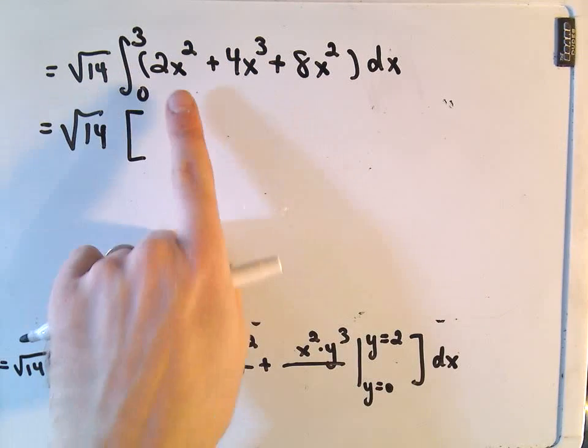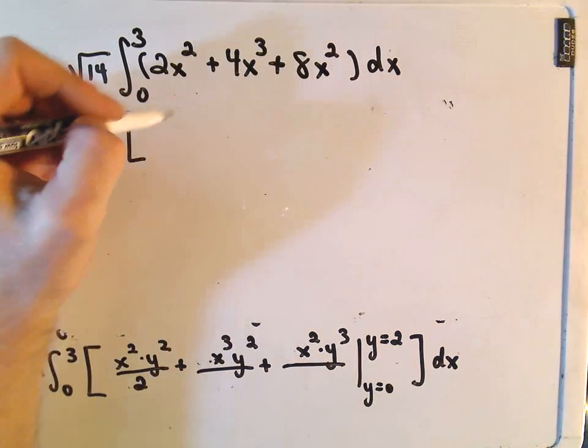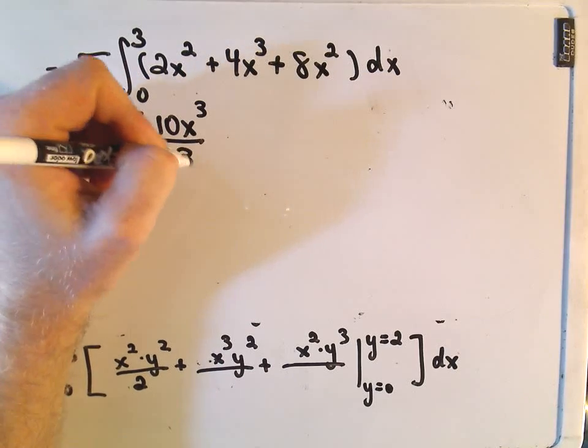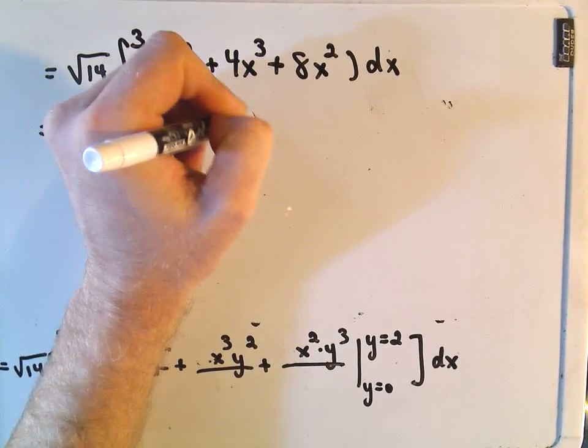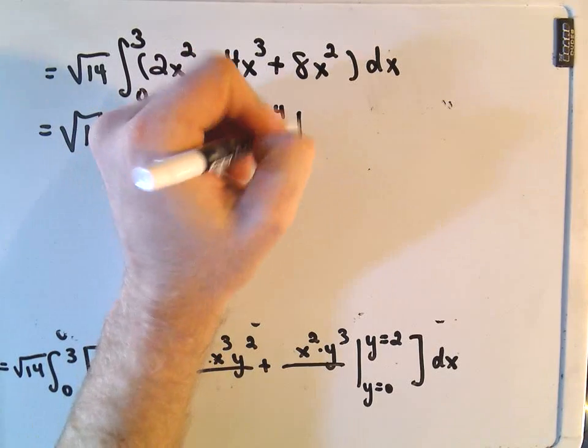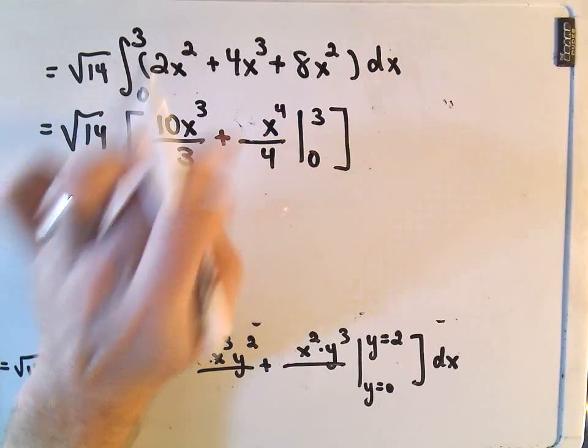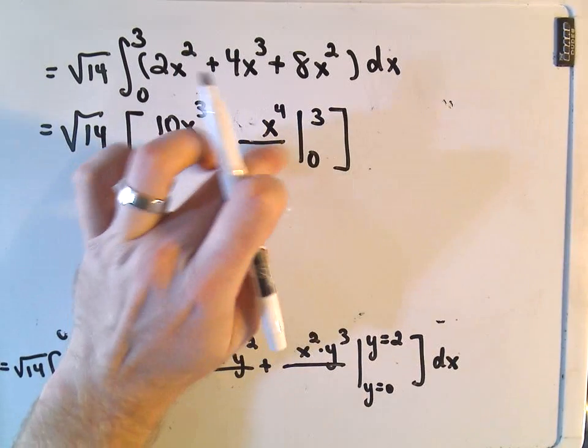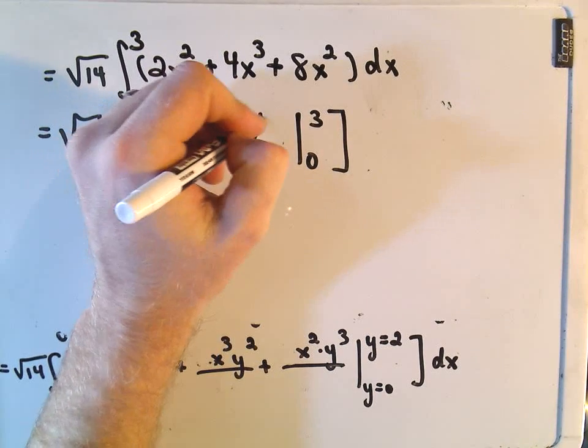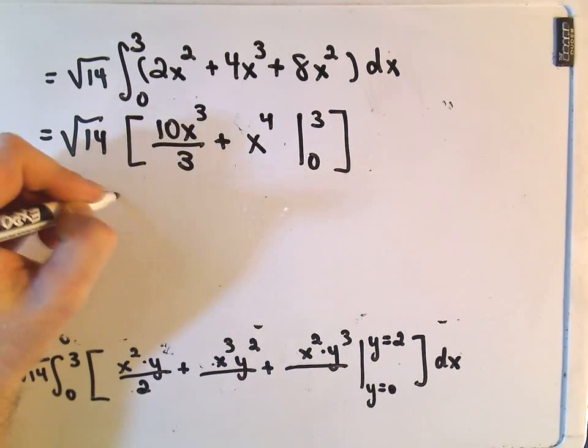I'm going to do this all in one fell swoop. Notice we have 2x² and 8x², which is 10x². If we integrate that, we get 10x³/3, and then 4x⁴/4, evaluating from 0 to 3. We can cancel out the 4s, just leaving x⁴. We've got √14 times this.